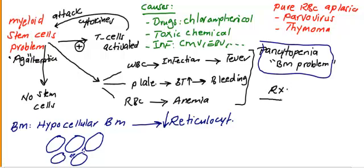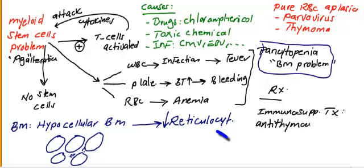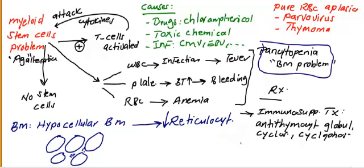The treatment options for aplastic anemia are two measures. First, immunosuppressant therapy, like antithymocyte globulin, cyclosporine, and cyclophosphamide. These drugs deal with the myeloid stem cell antigenic problem. Antithymocyte globulin is an especially important answer for aplastic anemia. The second modality of treatment is bone marrow transplant, which has a good response if the patient is young and has a compatible blood donor.